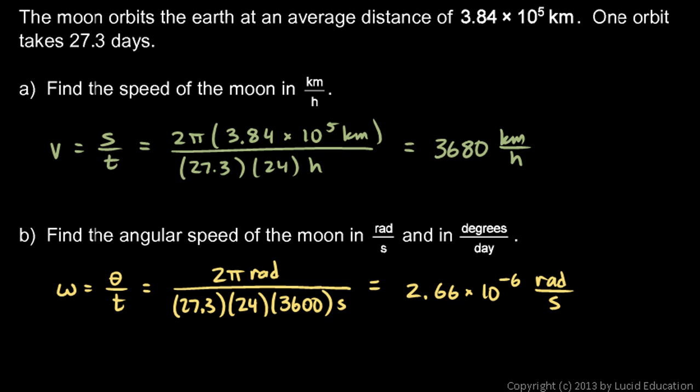So, that's an incredibly tiny angle per second, which makes sense, right? It takes the Moon about a month to go around, so you'd have a really small number of radians per second, a very small angle in one second.